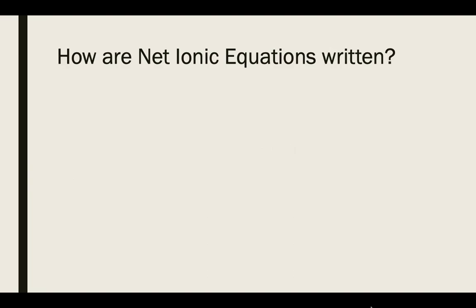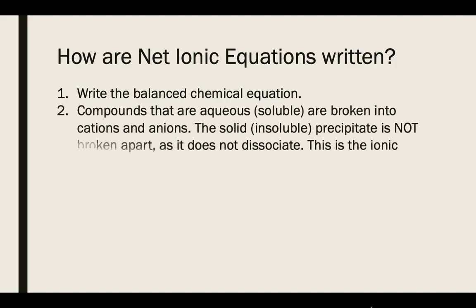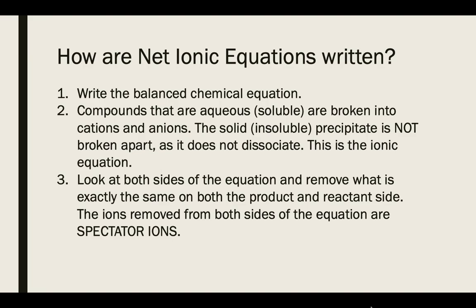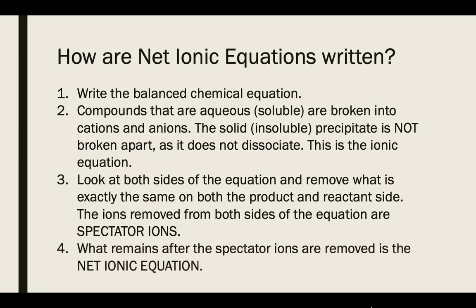To write a net ionic equation, we follow some steps. First, write the balanced chemical equation. After that, use your solubility rules to look at each reactant and product and classify them as aqueous or solid based on solubility. Everything that's aqueous is going to be broken apart into its respective ions. The solid, since it does not dissociate, remains together. After writing the equation and breaking apart aqueous solutions into ions, look at both sides to see what's exactly the same. Anything identical is removed and classified as a spectator ion. Anything that remains is part of the net ionic equation.